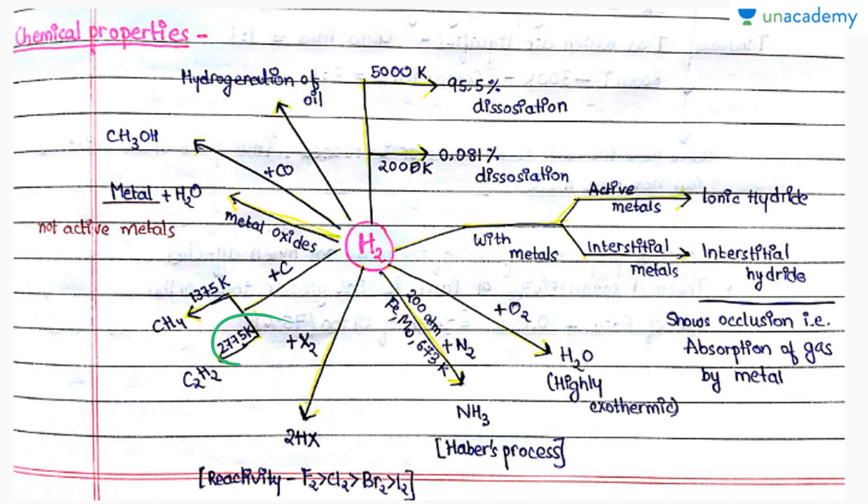With halogens, it forms halogen acid. With carbon at this temperature, it forms methane, but at slightly higher temperature we get C2H2. Hydrogen reacts with metal oxides to give metal and water, but the metal oxides should not be of active metals—for example, it should not be sodium or any s-block element. With carbon monoxide, it forms methanol and this process is used in bulk preparation of methanol.